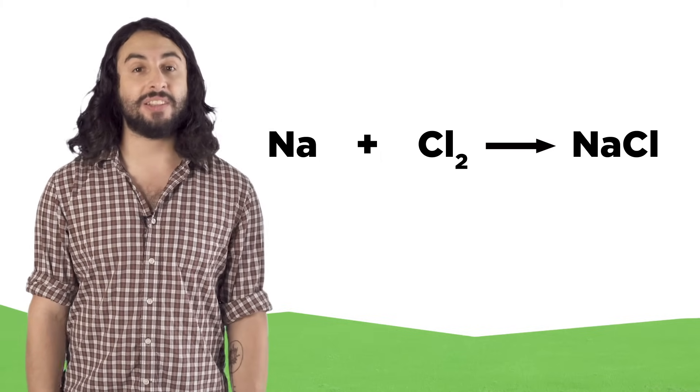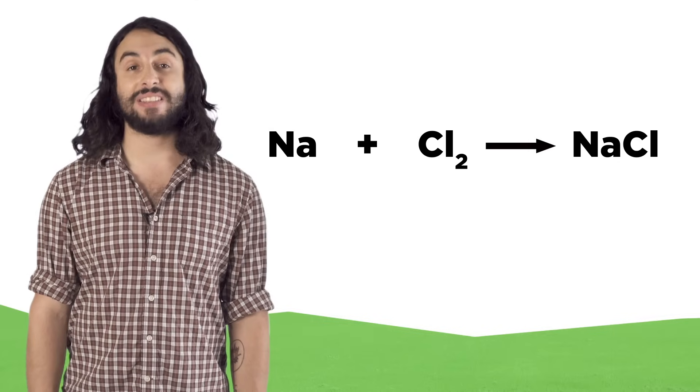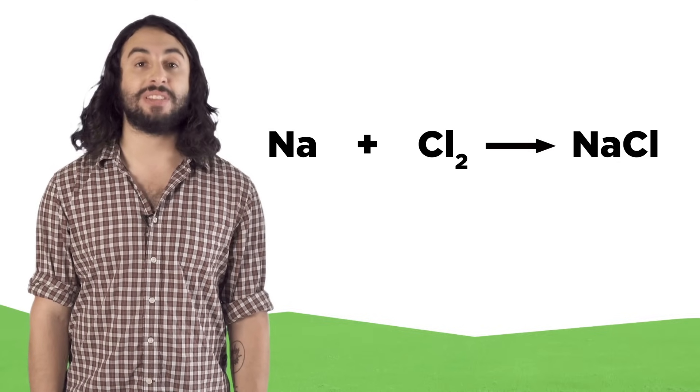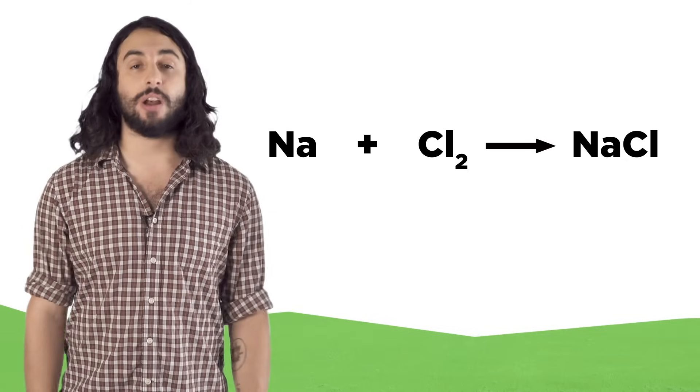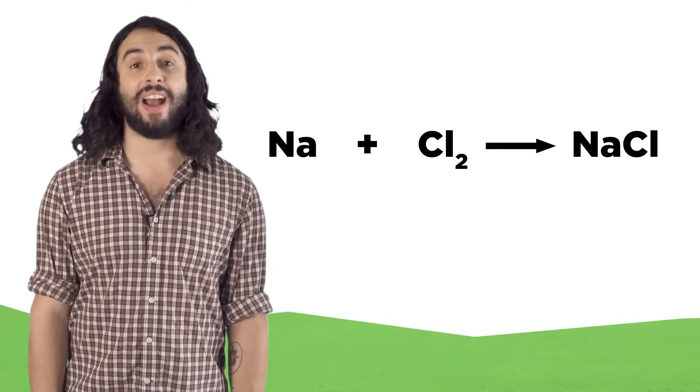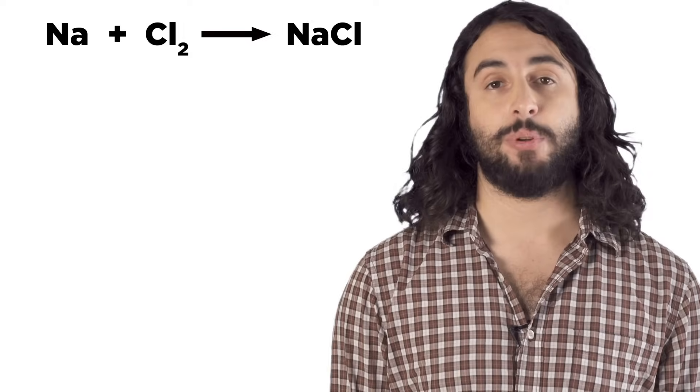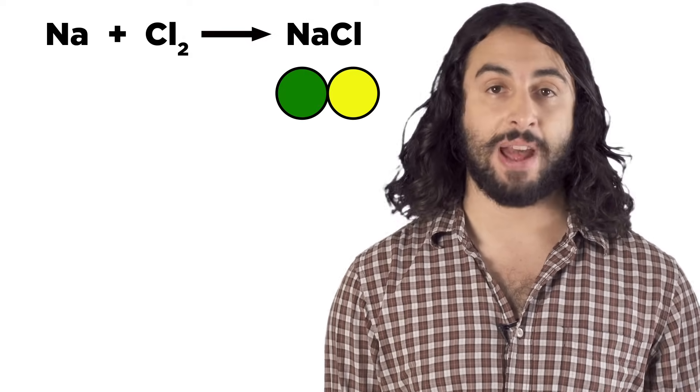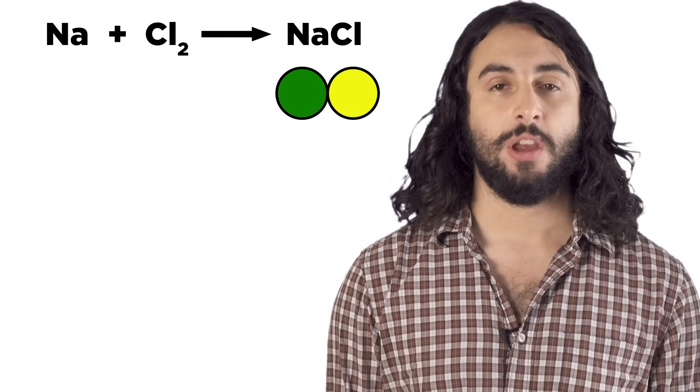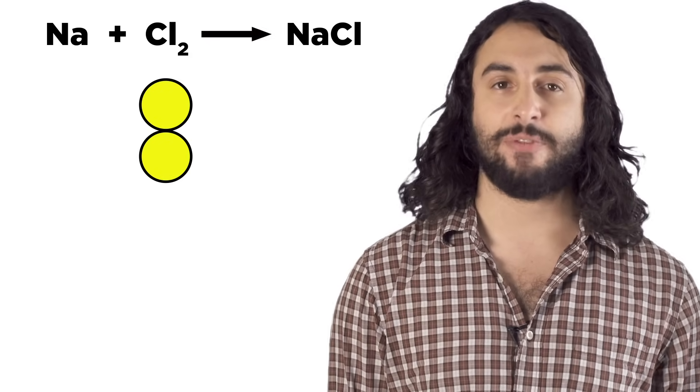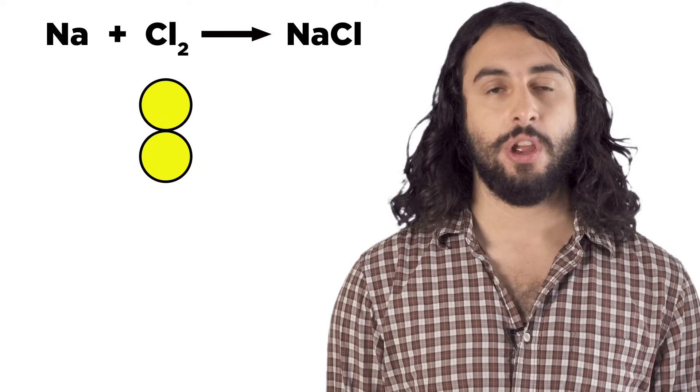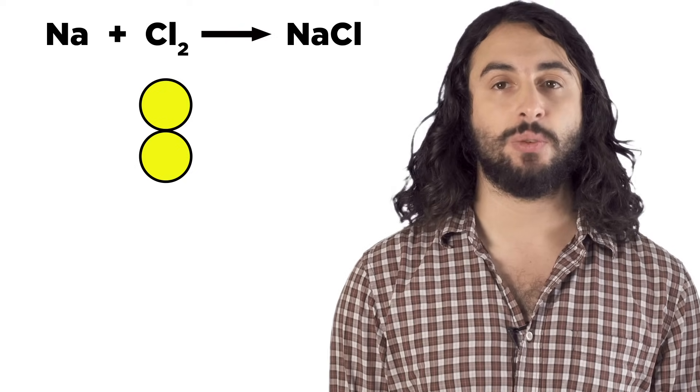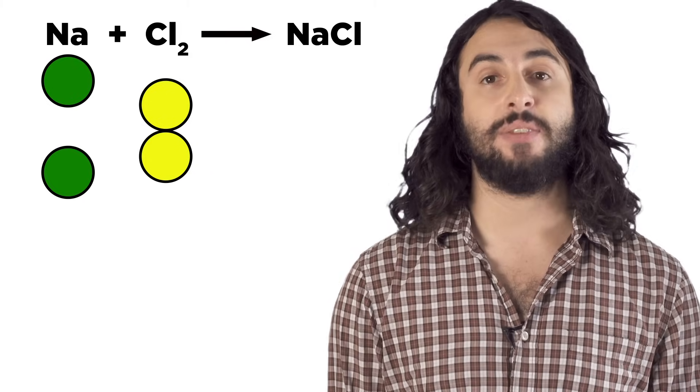When you see a chemical reaction, it describes the substances involved, but if we want to be very accurate we need to balance the equation so that there are the same number of atoms on both sides, because atoms won't just appear or disappear. For example, one molecule of chlorine gas will react with two sodium atoms to give two molecules of sodium chloride.